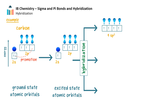When all four orbitals mix, they form four equivalent hybrid atomic orbitals of equal energy. Their energy is slightly lower than the unhybridized p orbitals. The shape of these hybrid orbitals is a distorted dumbbell shape. Each of these four orbitals is called an sp3 orbital, since they are formed by the mixing of an s and three p orbitals.